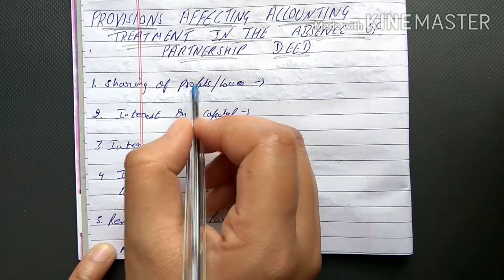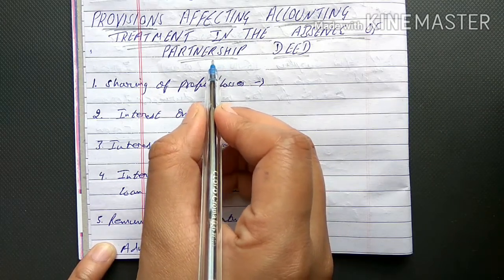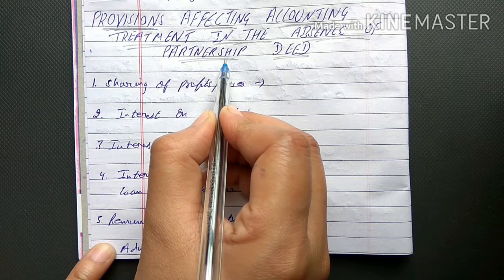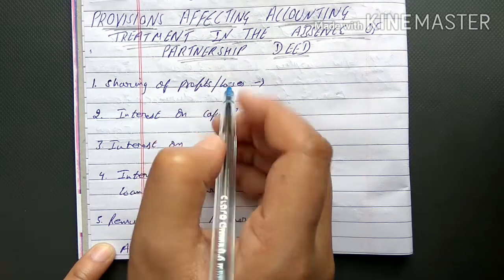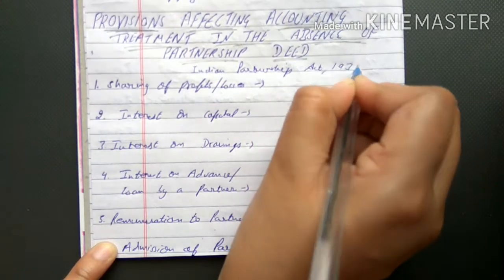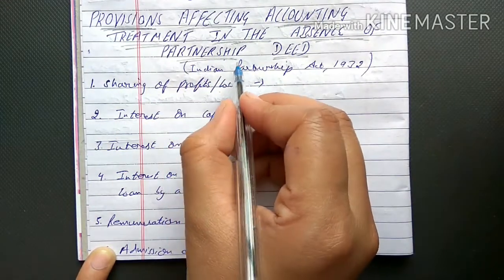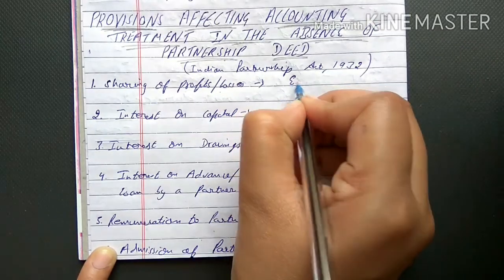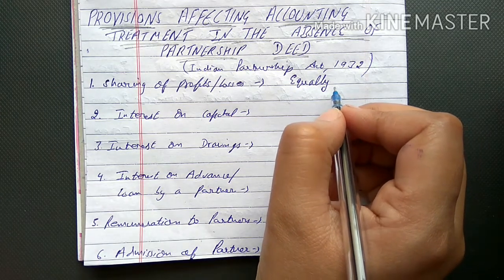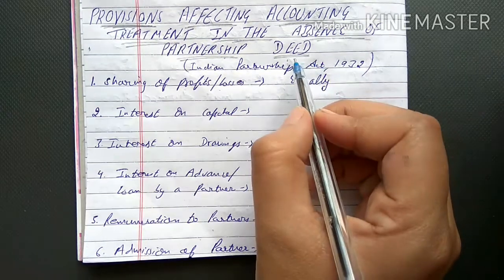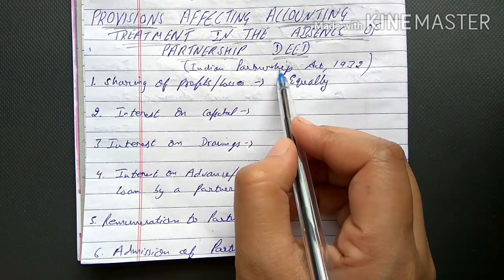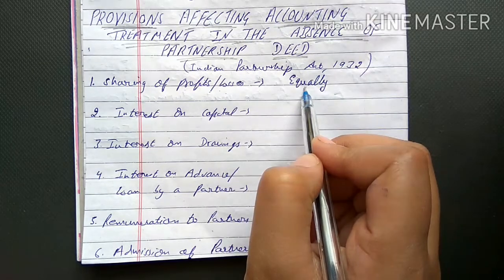The first provision is sharing of profits and losses. If you have made a deed and written in it that profit will be shared 50-50 or 70-30, then profit sharing must be done according to that deed. But if no deed was made, the Indian Partnership Act 1932 applies, which states that profit and loss must be divided equally among all partners.